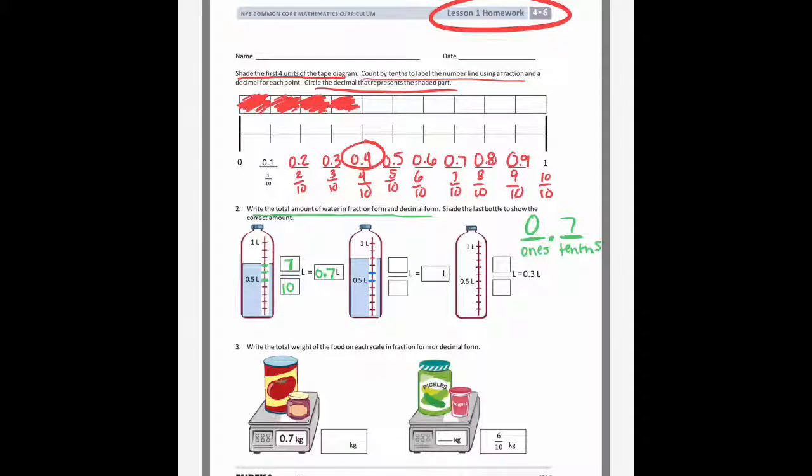Okay, on the second one, I'm going to count up from 5, 6, 7, 8 tenths of the bottle, which would be 0.8. And then on this one, it wants you to color it in, and it says 0.3 liters. So I'm going to count up 1 tenth, 2 tenths, 3 tenths right there, shade it in. And so my fraction form would be 3 tenths liters.